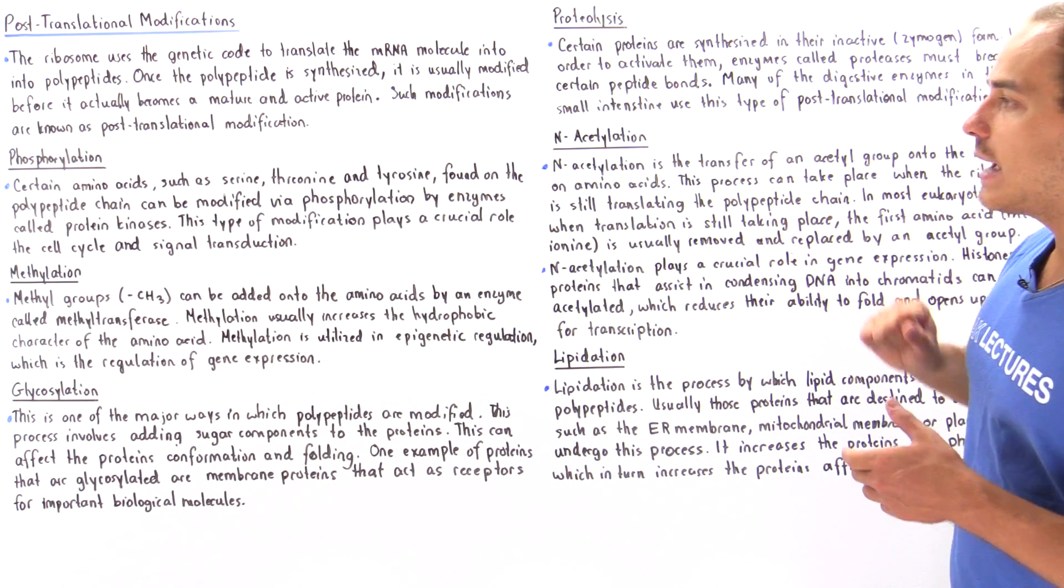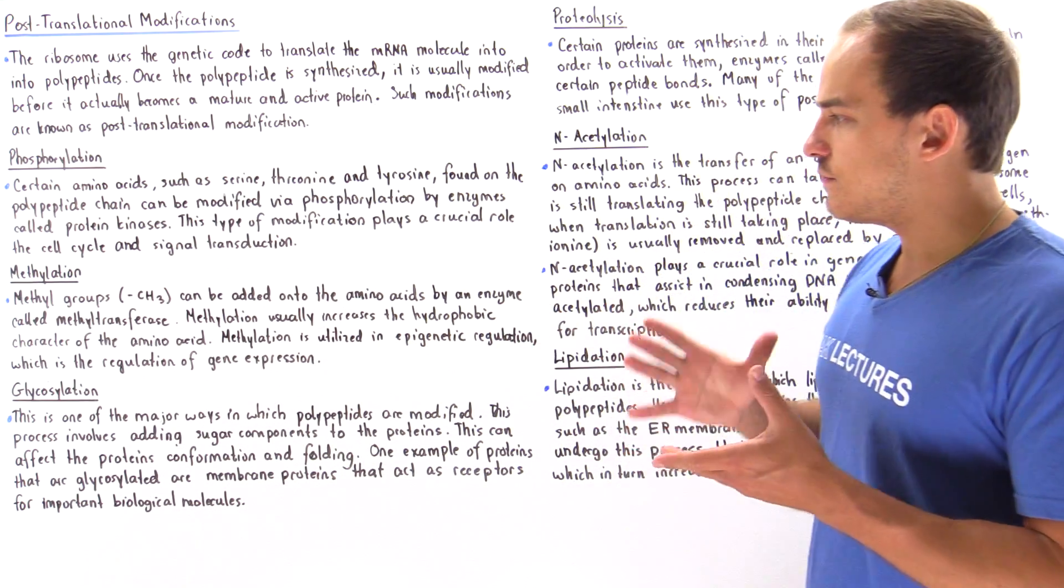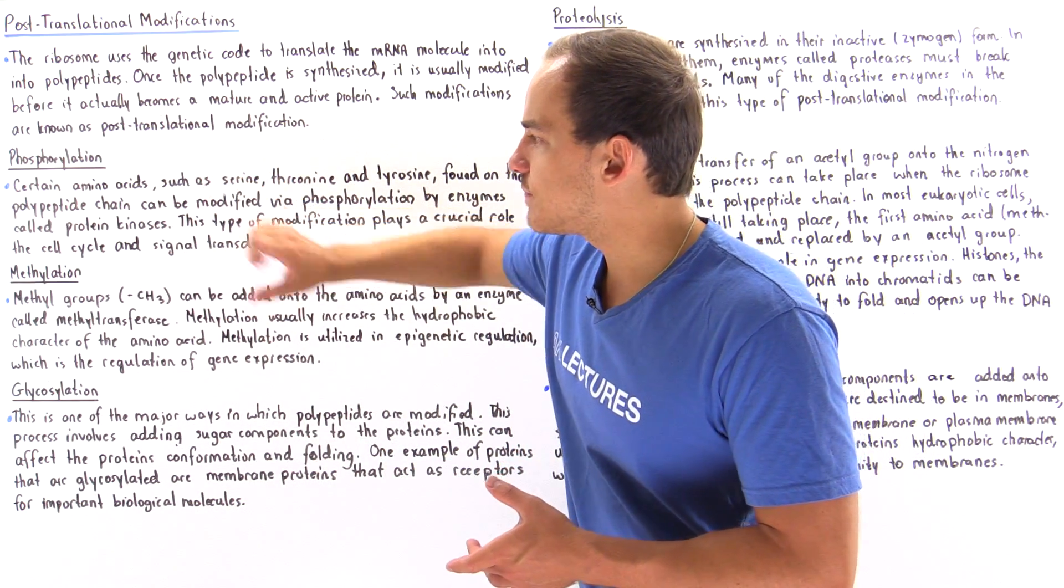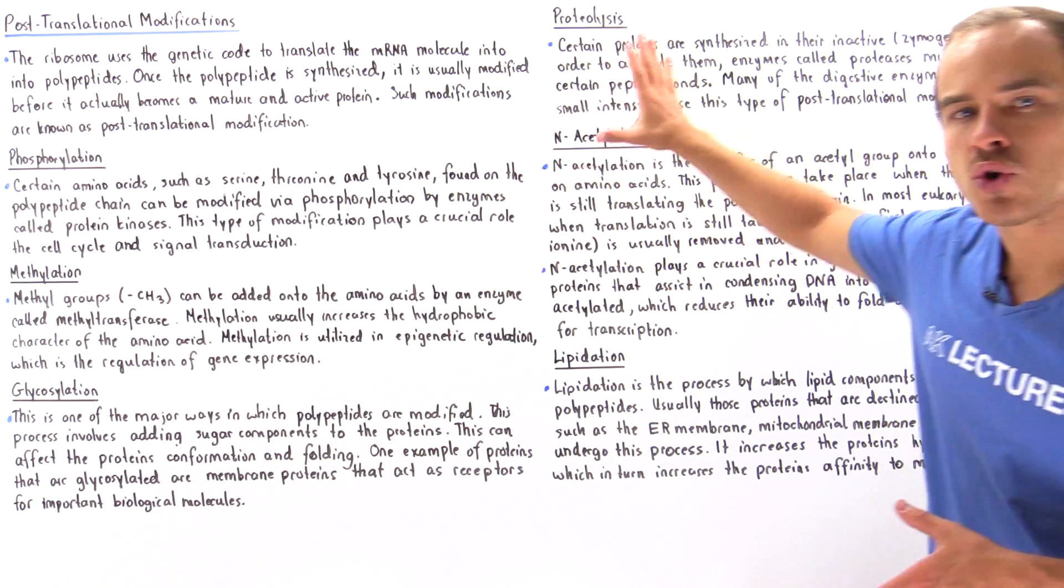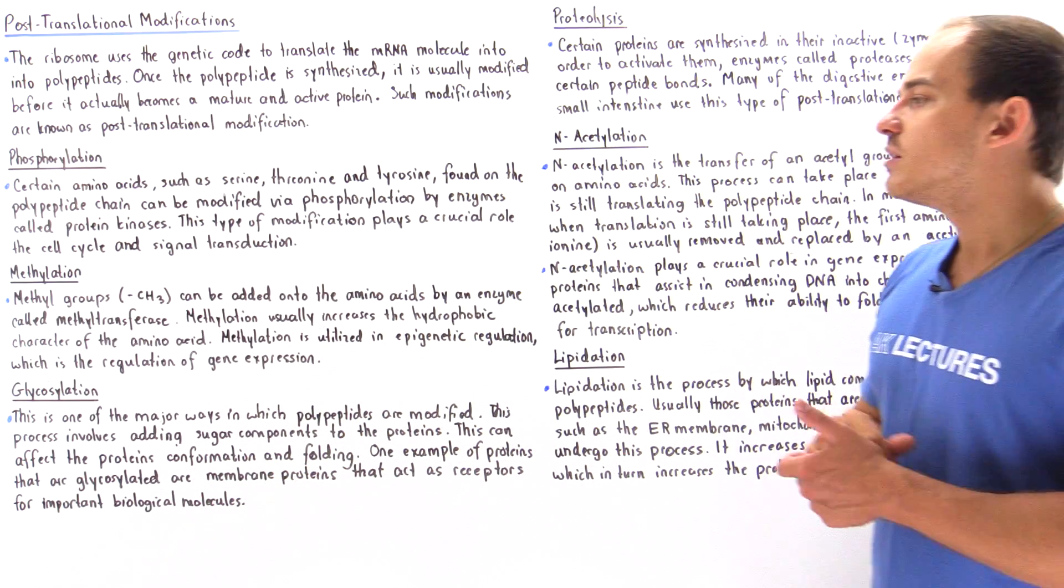The types of post-translational modifications that we're going to briefly discuss in this lecture are shown on the board: phosphorylation, methylation, glycosylation, proteolysis, N-acetylation, as well as lipidation. Let's begin with the process of phosphorylation.